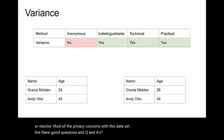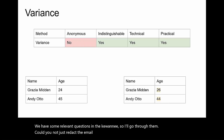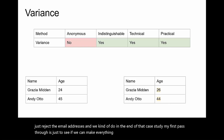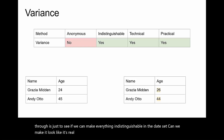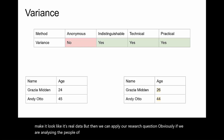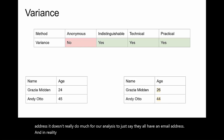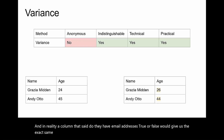We have a relevant question in the Q&A: could you not just redact the email address? Yes, we could just redact the email addresses and we kind of do at the end of that case study. My first pass through is just to see if we can make everything indistinguishable in the dataset. But when we apply our research question — if we're analyzing the people of Manchester and all we know is that they all have an email address — a column that said 'do they have email addresses, true or false' would give us the exact same potential for analysis as the email addresses themselves.